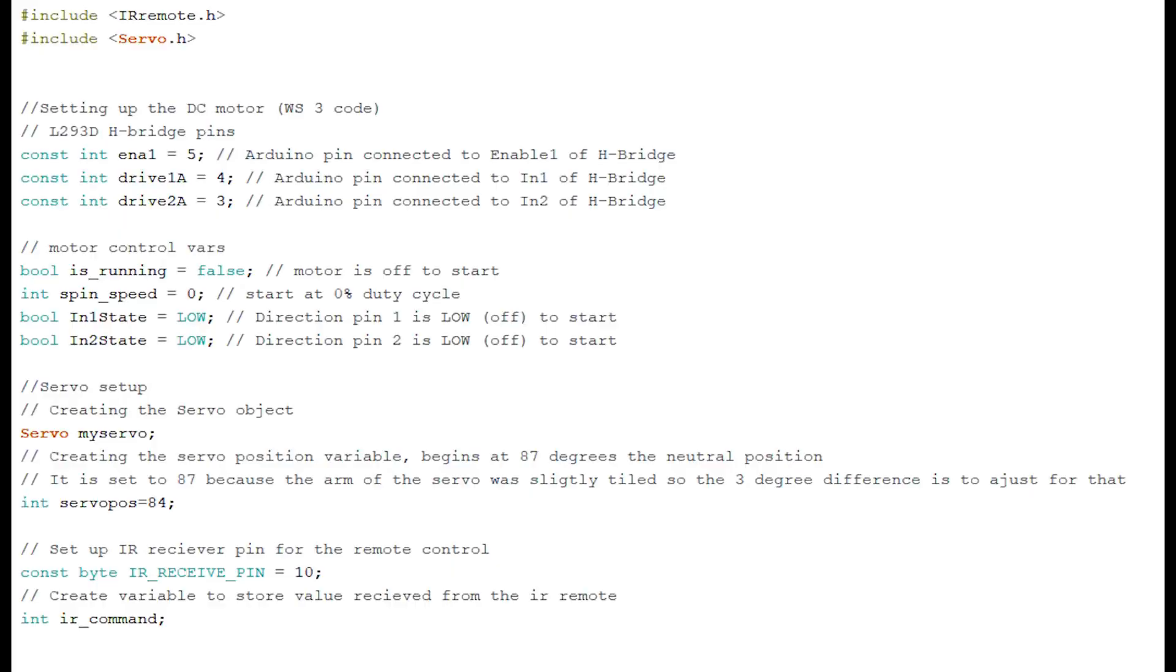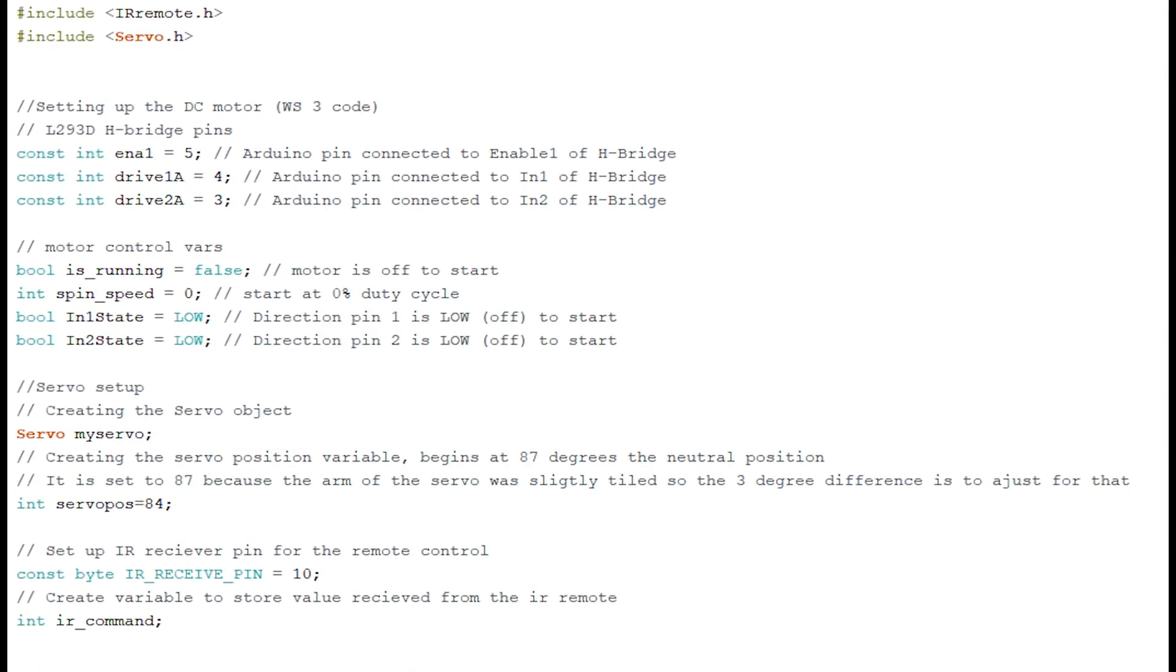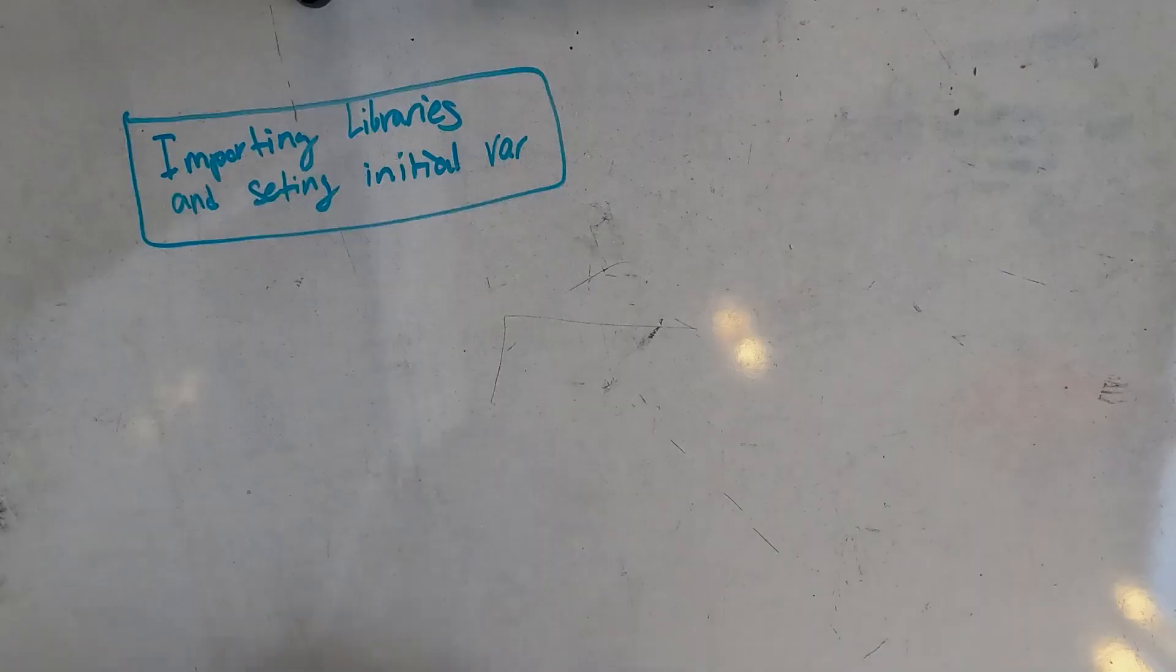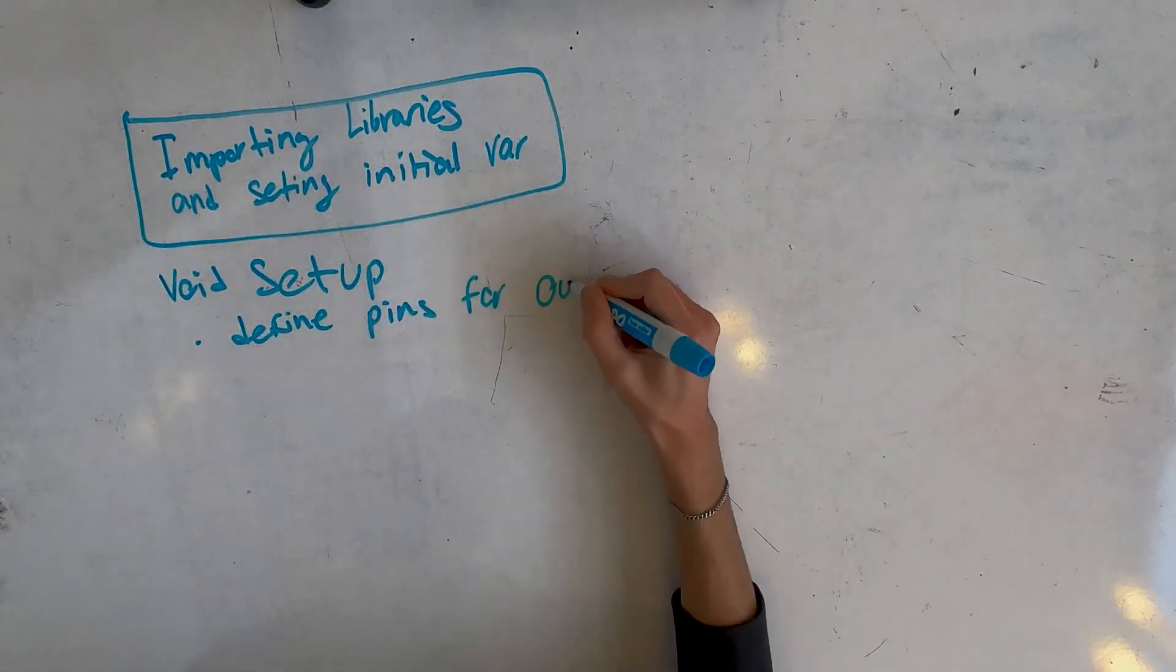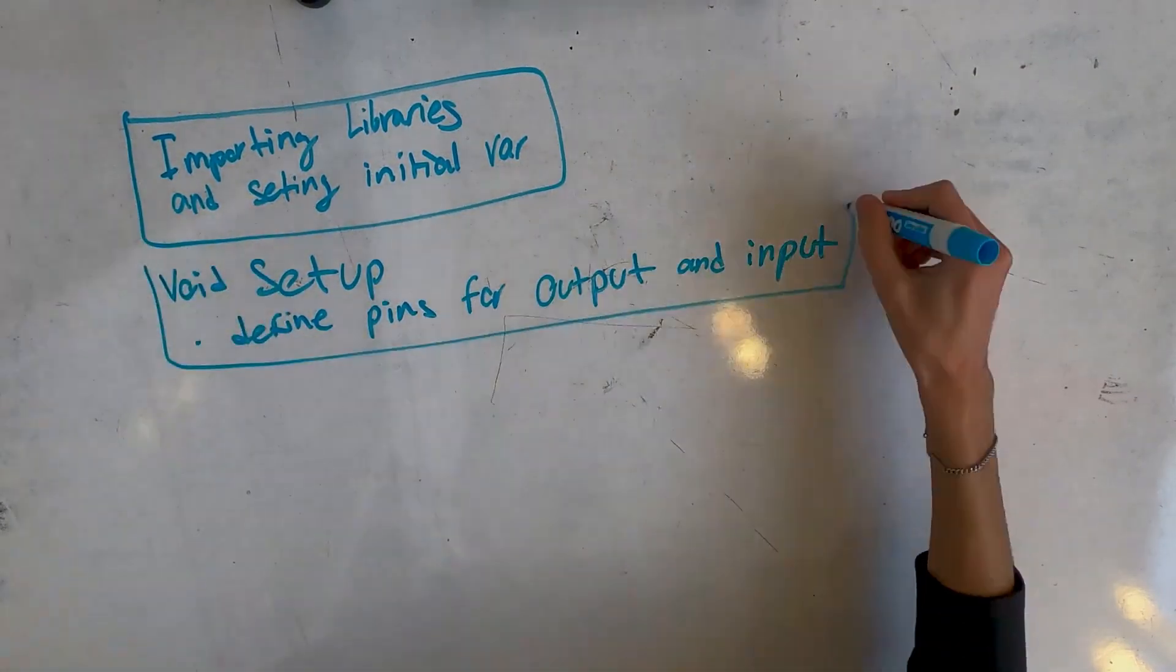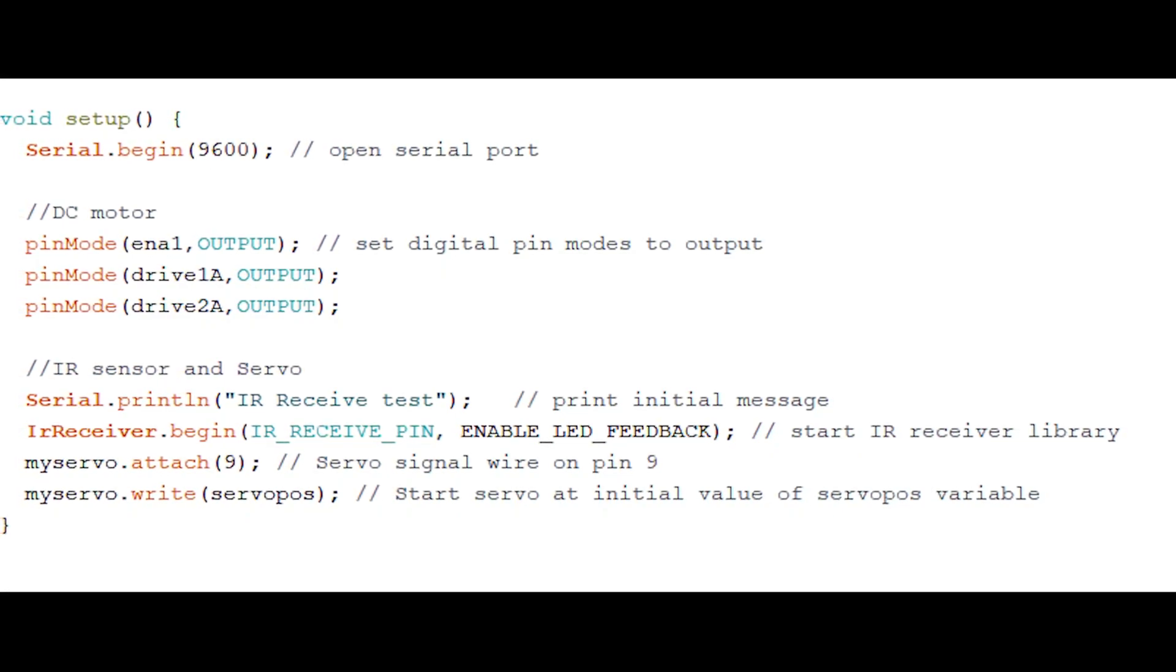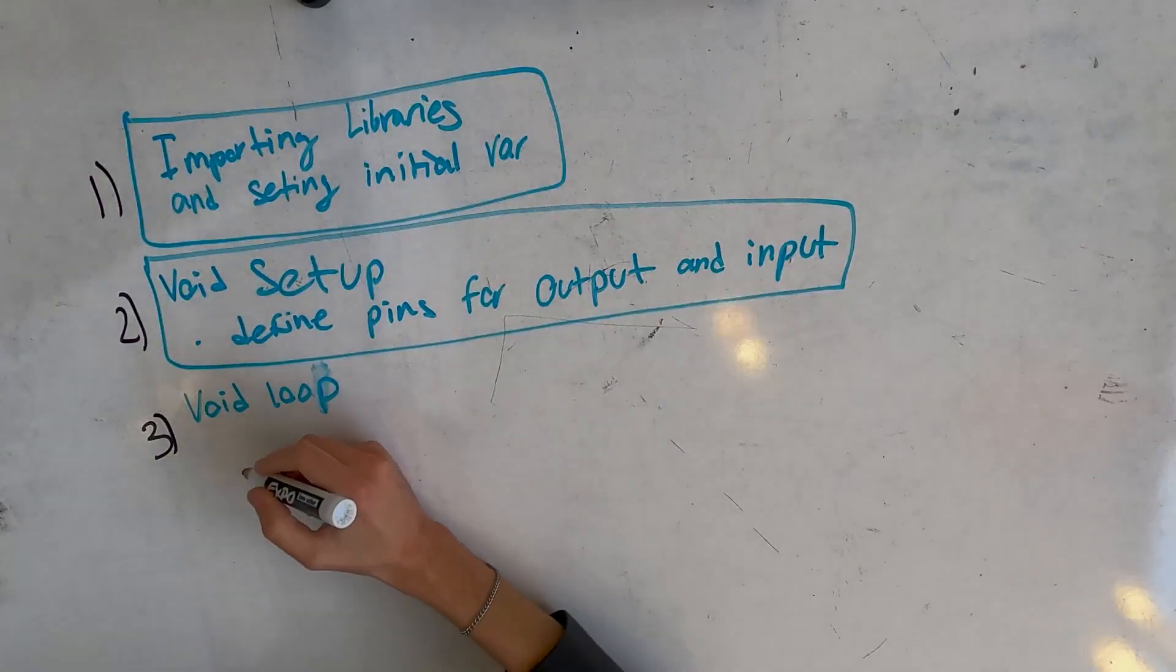First, I started by gathering the necessary components. Of course, you need the heart of the project, which is the Arduino board. I used the Arduino Uno, but you can use any version you're comfortable with. Then, I picked up some basic motors, a chassis for the rover, and a solar panel to power the whole thing.